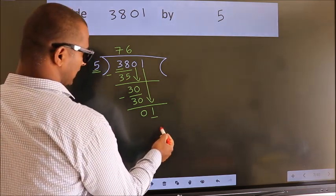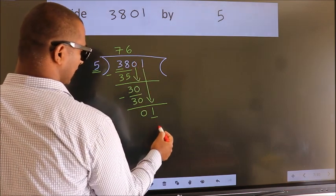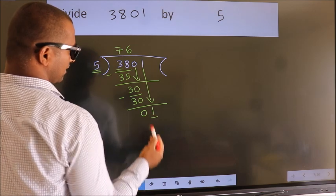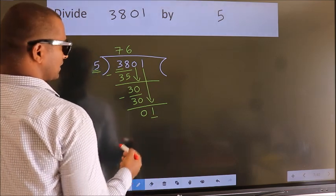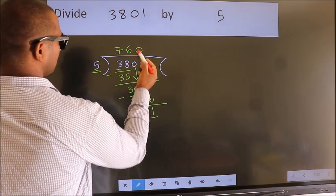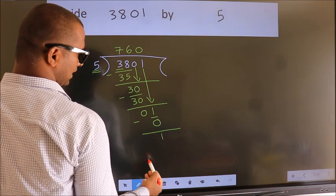which number should be right here. If I take 1, we get 5. But 5 is larger than 1. So what we do is, we take 0 here. So 5 into 0, 0. Now we subtract. We get 1.